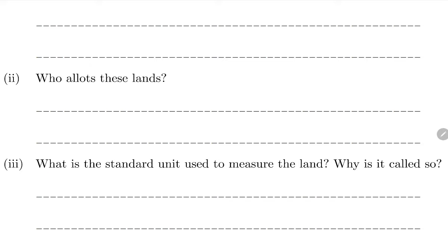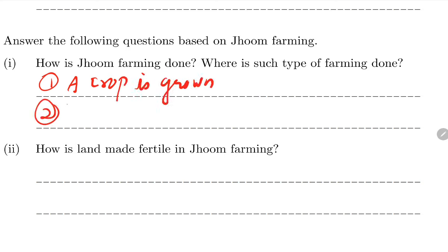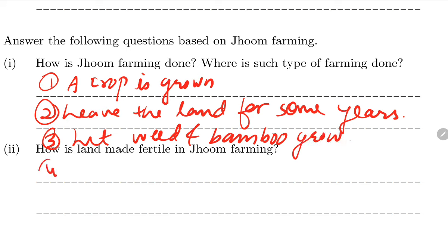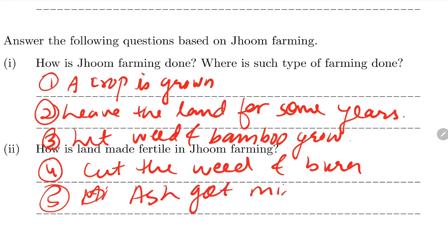How is Zoom farming done? Step-wise: First, a crop is grown on the land. Then leave the land for some years. Let weeds and bamboo grow there. After that, cut the weeds and burn them. The ash gets mixed into the land, making it fertile again. Then grow another crop there. This method is also called slash and burn farming.